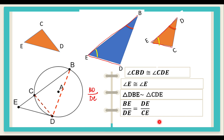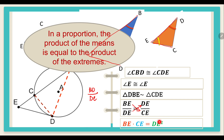Since we already have a proportion — one ratio equals another ratio — we can then cross multiply: BE times CE equals DE times DE, which is DE squared. Why did we do that? In a proportion, the product of the means is equal to the product of the extremes.